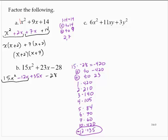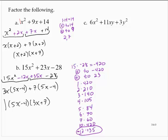Grouping: 15x squared minus 12x is 3x times (5x minus 4), plus 35x minus 28 is 7 times (5x minus 4). So the trinomial factors as (5x minus 4) times (3x plus 7). Again, you could multiply that back out to verify.